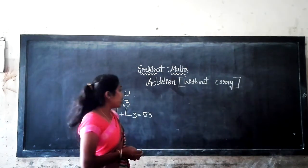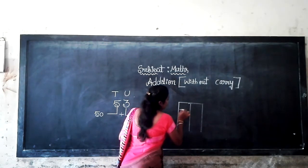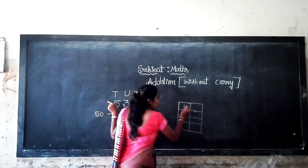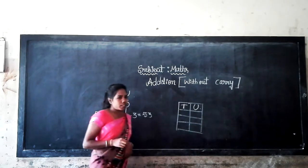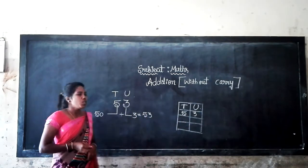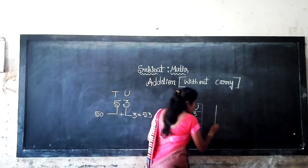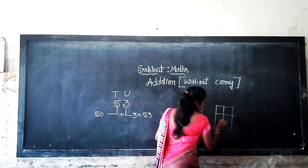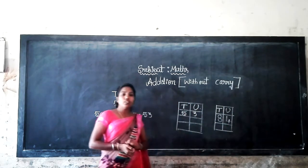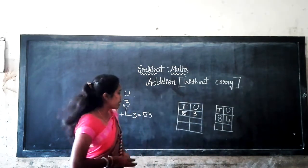Do you know how to add using the place value chart? You will take the same number, 53. Now just write tens and units, then write the numbers here: 5 and 3. So in 53 there are 5 tens and 3 units, isn't it? I will give you one more example: 84. In 84 there are 8 tens and 4 units.